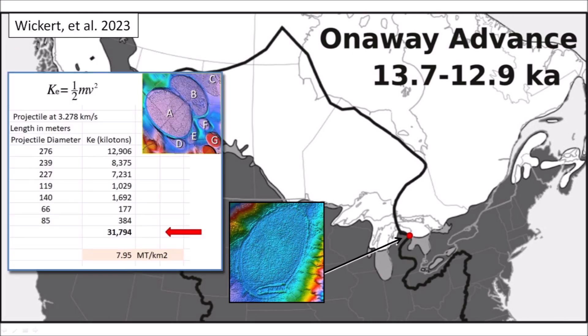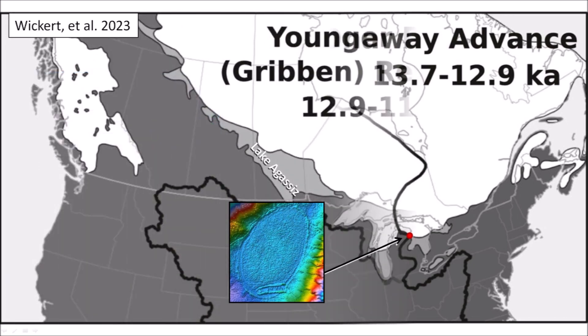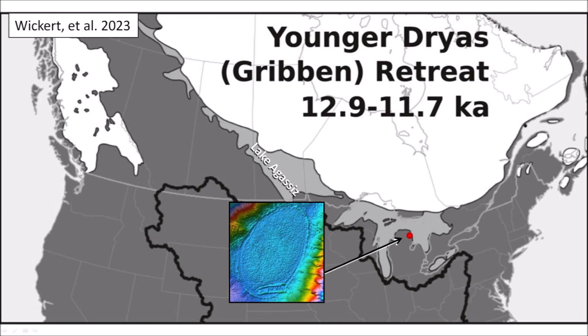The glacier ice bombardment in Marlboro County, South Carolina had energy of approximately 8 megatons of TNT per square kilometer. The kill zone had a radius of 1,500 kilometers from the Great Lakes, extending from the Rocky Mountains to the east coast of the United States. During the Younger Dryas retreat, the Great Lakes and all of the United States became ice-free. Lake Agassiz became exposed and water started flowing toward the Atlantic Ocean through the St. Lawrence River. Global temperatures dropped significantly.